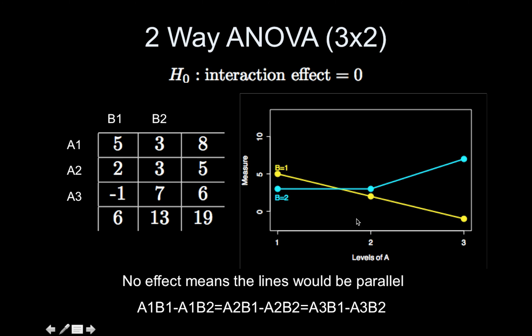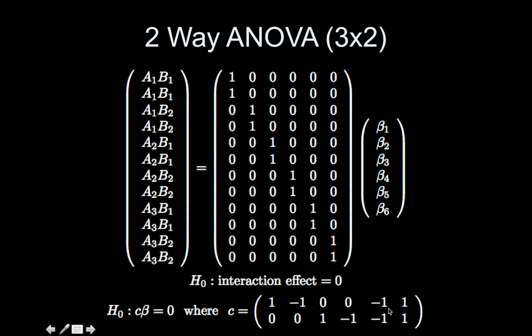So here's what it looks like. A1 B1 minus A1 B2 equal to A2 B1 minus A2 B2 equal to A3 B1 minus A3 B2. So now we need to get a zero, so we need to subtract this from everything. And it ends up, I didn't write it out, it's just a mess. But this ends up being what your contrast looks like. This is A1 B1 minus A1 B2.